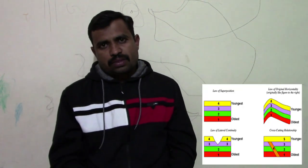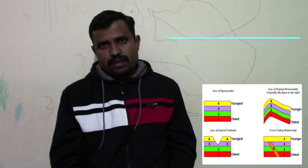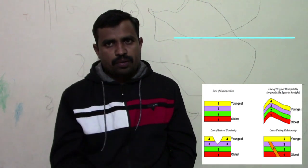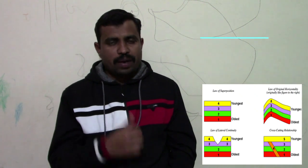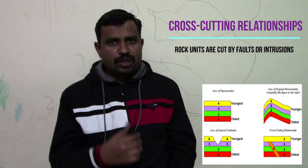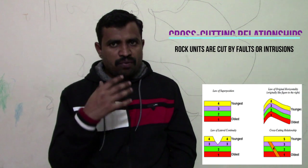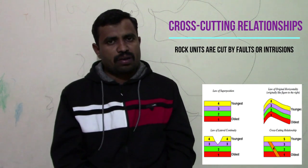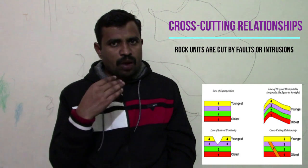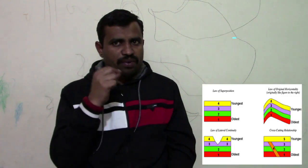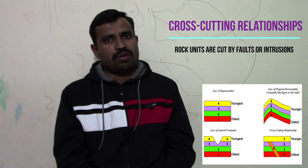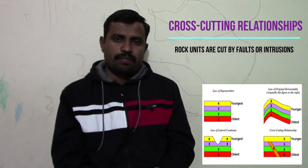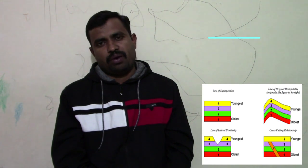The fourth principle is cross-cutting relationships. Similar to the principle of superposition, a rock must already exist to be cut by a fault, igneous intrusion, or erosion. By carefully examining which rock units are cut by faults or intrusions, or which rock units have been weathered, geologists can further determine the relative ages of the rocks.